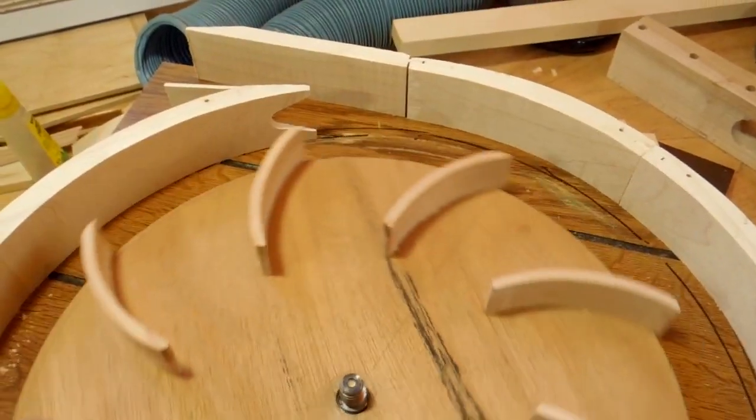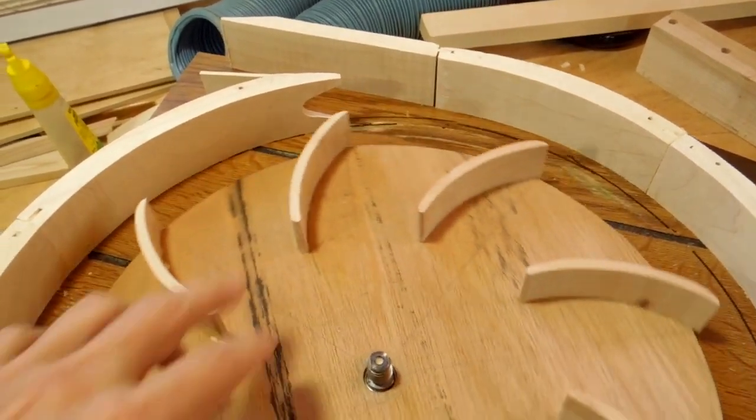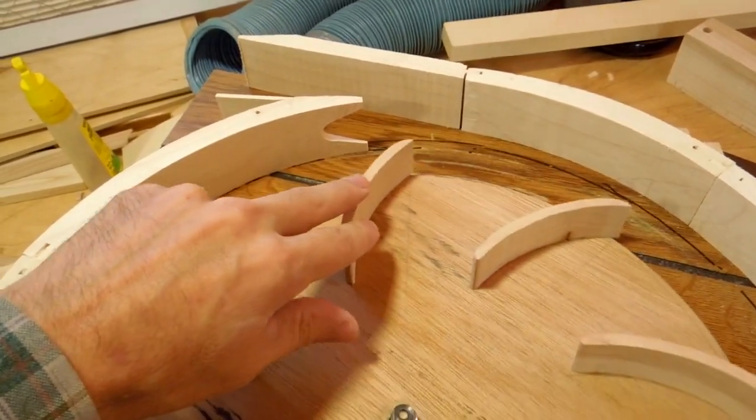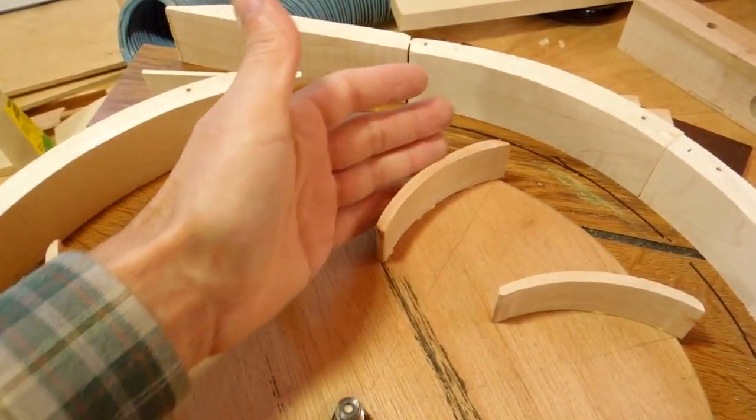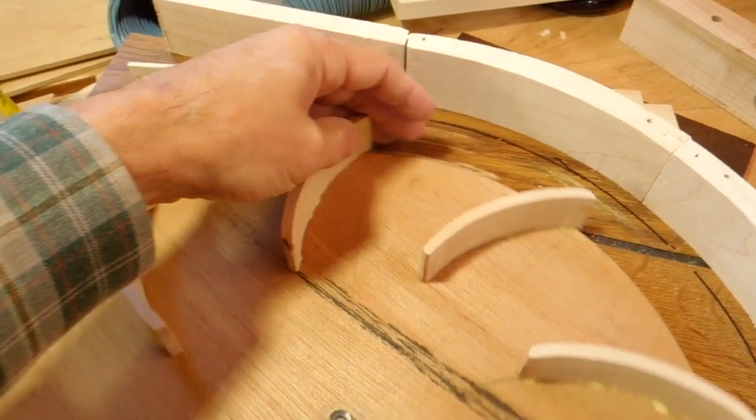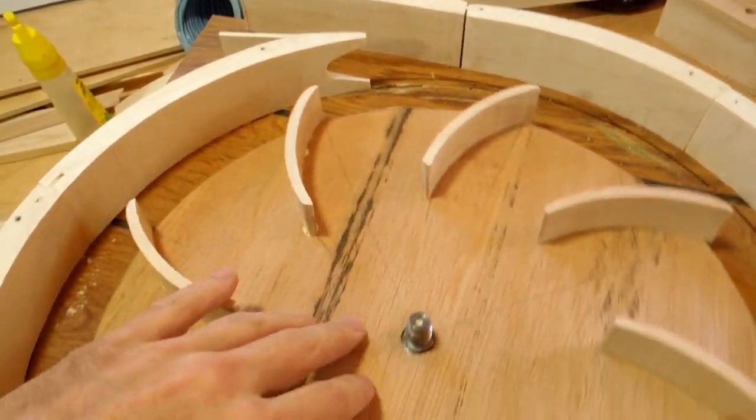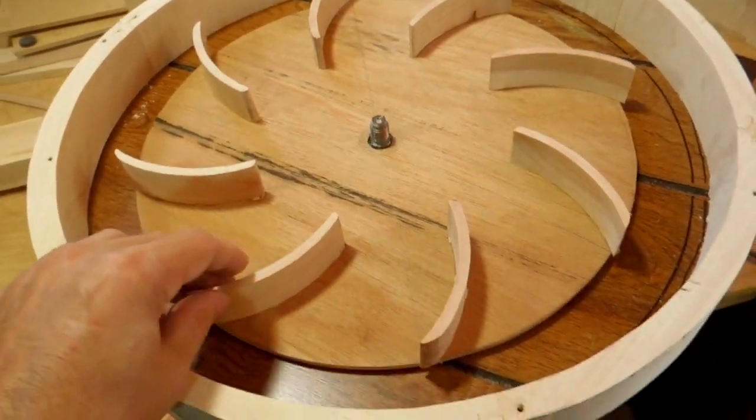And the blades curve away from the direction of rotation, which is how they always go for greater efficiency. So that way as the air moves out some of the Coriolis forces actually cause it to be pushed out further and we put a little bit less torque on the motor. So hopefully that will work.